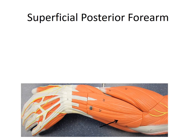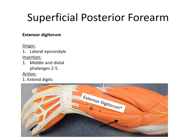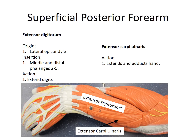Looking at the superficial posterior forearm, our first muscle is the extensor digitorum. When looking at forearm muscles, it's important to look at where the fibers are running as well as where the tendon goes — the tendon is indicated by the gray part of the model. We can see the tendon going out towards the digits. The extensor carpi ulnaris is also an extensor — it extends the carpals. It's on the ulna side, the medial side of the forearm, which is why we call it 'ulnaris.'